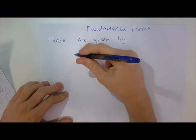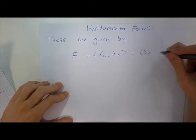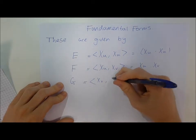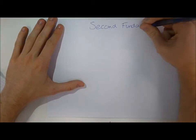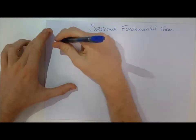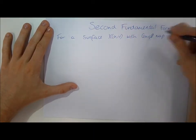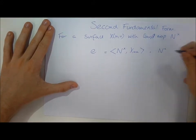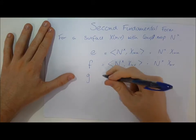The first fundamental form is given by uppercase E, F, and G. E is the dot product of x_u with x_u, F is the dot product of x_u with x_v, and G is the dot product of x_v with x_v. The second fundamental form for a surface x(u, v) with Gauss map N(x) is given by lowercase e, f, and g. Where e is the dot product of the Gauss map and x_uu, f is the dot product of the Gauss map and x_uv, and g is the dot product of the Gauss map and x_vv. These uppercase and lowercase E, F, G's are called the coefficients of the first and second fundamental forms respectively.